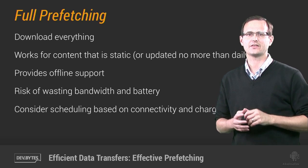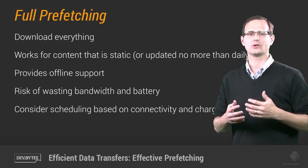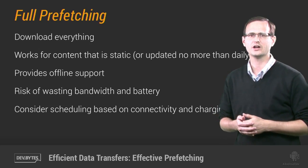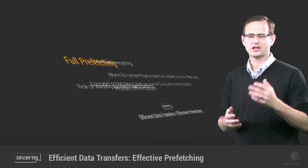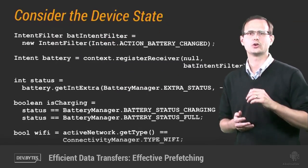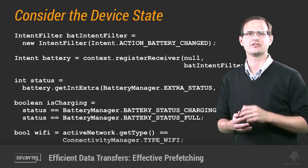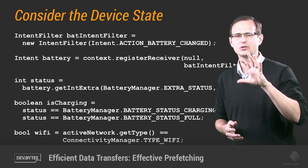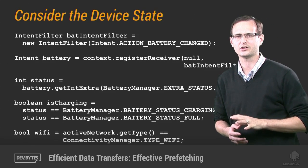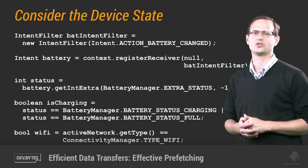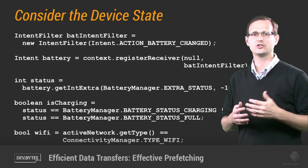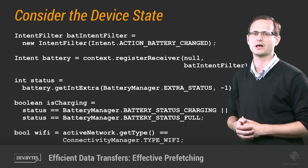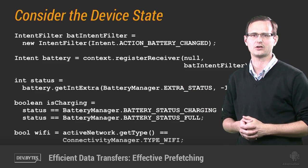One way to mitigate the cost associated with downloading more than five minutes' worth of data is to schedule the download to occur at a time when bandwidth and battery life isn't as important — specifically when the device is charging and connected to Wi-Fi, as determined here by using the connectivity manager and battery manager.